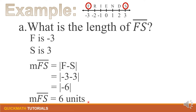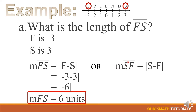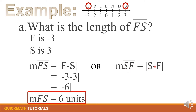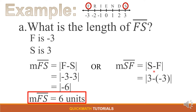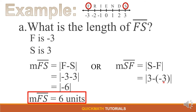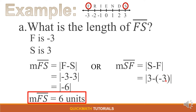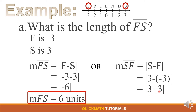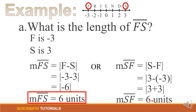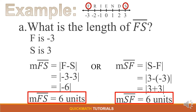Thus, we have the same answer using both methods. You can also find the length starting from S to F: |S − F| = |3 − (−3)|. Substituting, we have 3, copy the minus, and F is negative 3, so we use parentheses. Negative times negative becomes positive, so we have 3 + 3 = 6. The absolute value of 6 is 6 units. So they have just the same answer — you can solve from F to S or S to F.